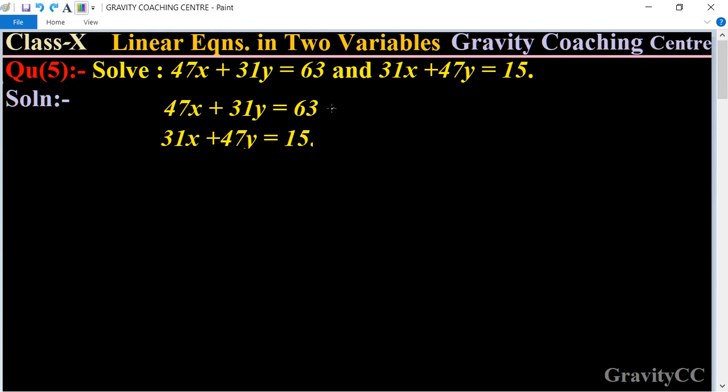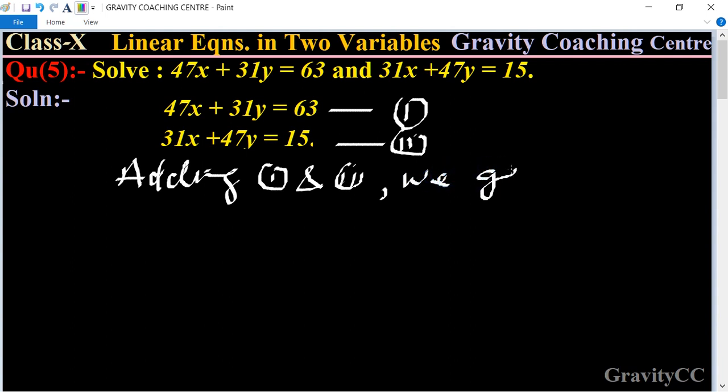Suppose this equation is the first equation and this one is the second. Now we are adding equations 1 and 2. Adding equation 1 and 2, we get 47x plus 31y equals 63 and 31x plus 47y equals 15.